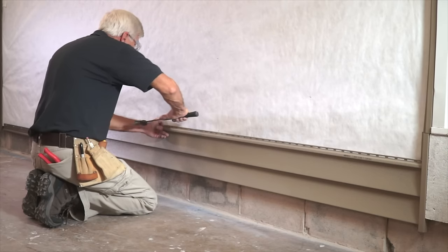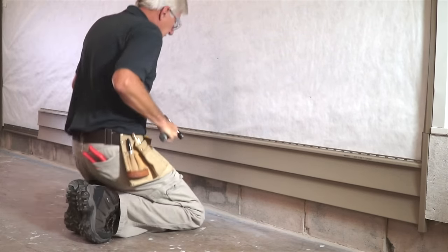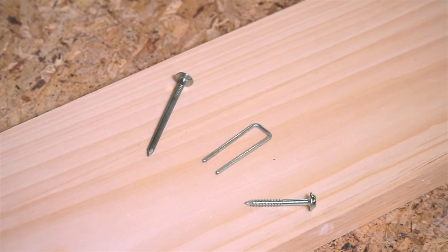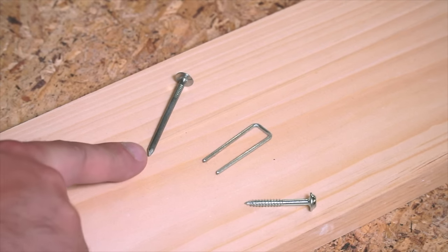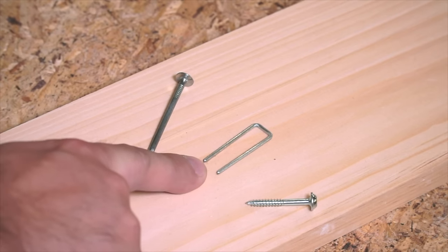Before you apply anything to the walls, let's review fastener choices, fastening techniques, and tools. For fasteners, you can use aluminum, galvanized steel, or other corrosion-resistant nails, staples, or screws.